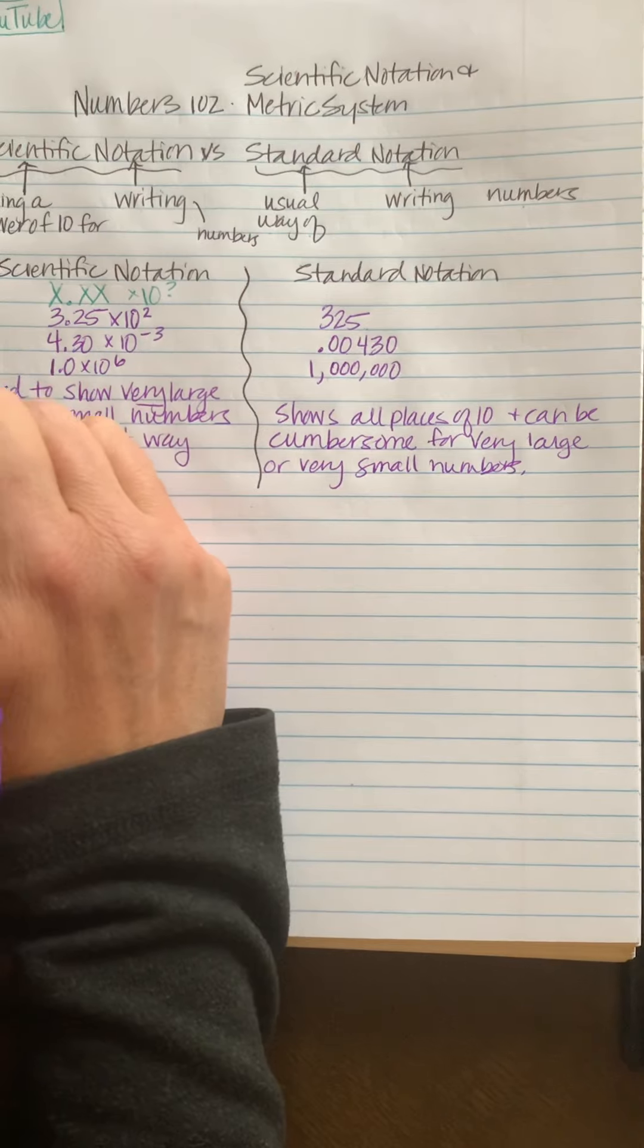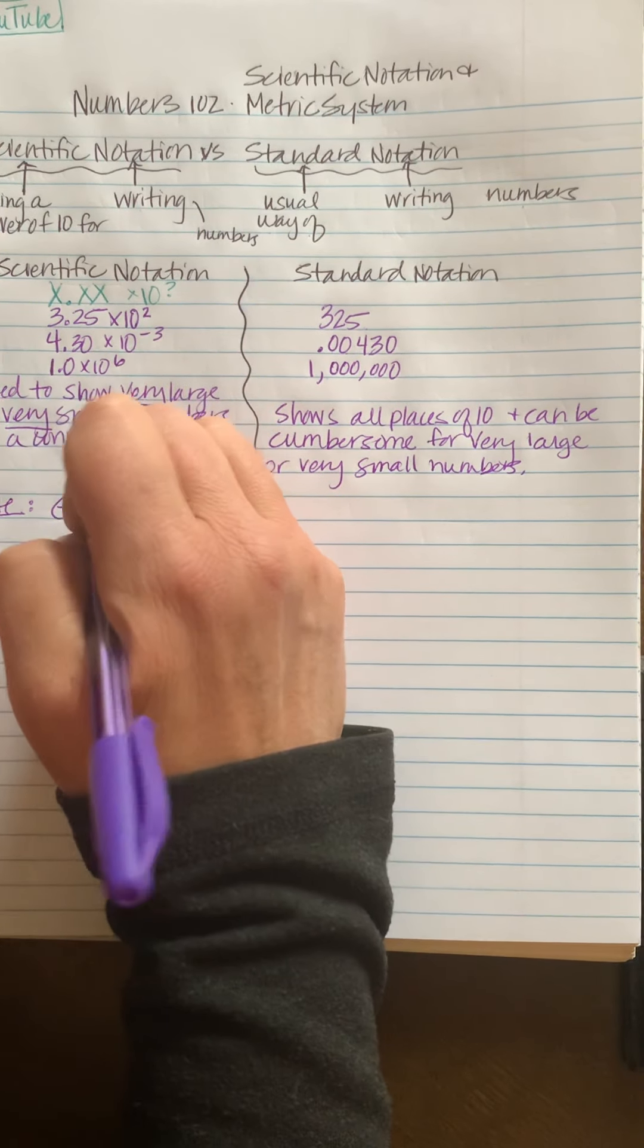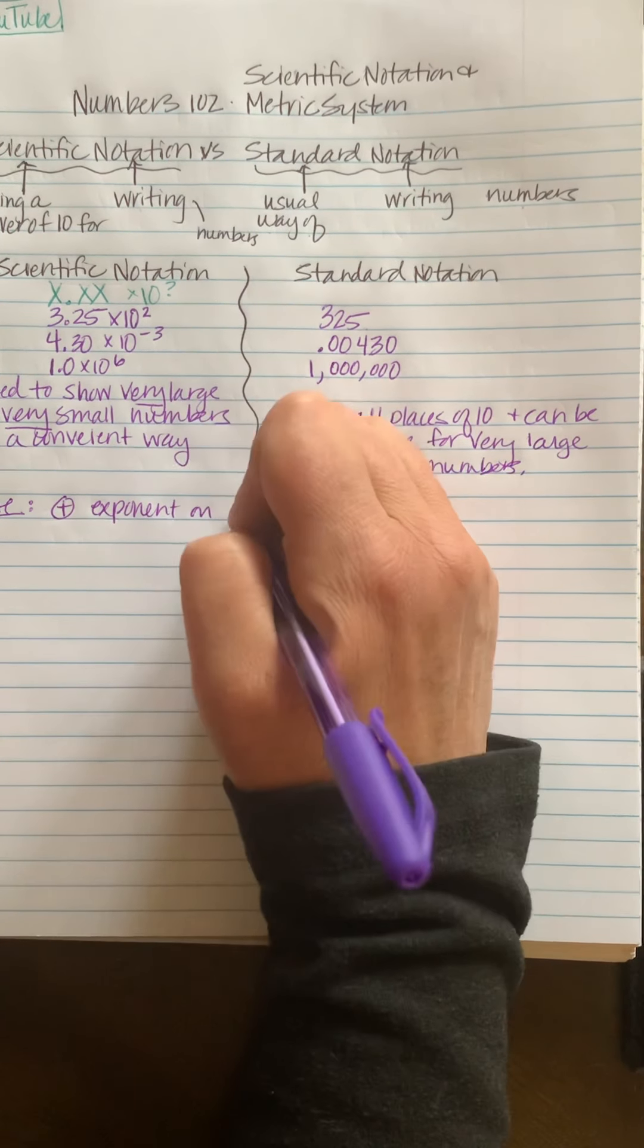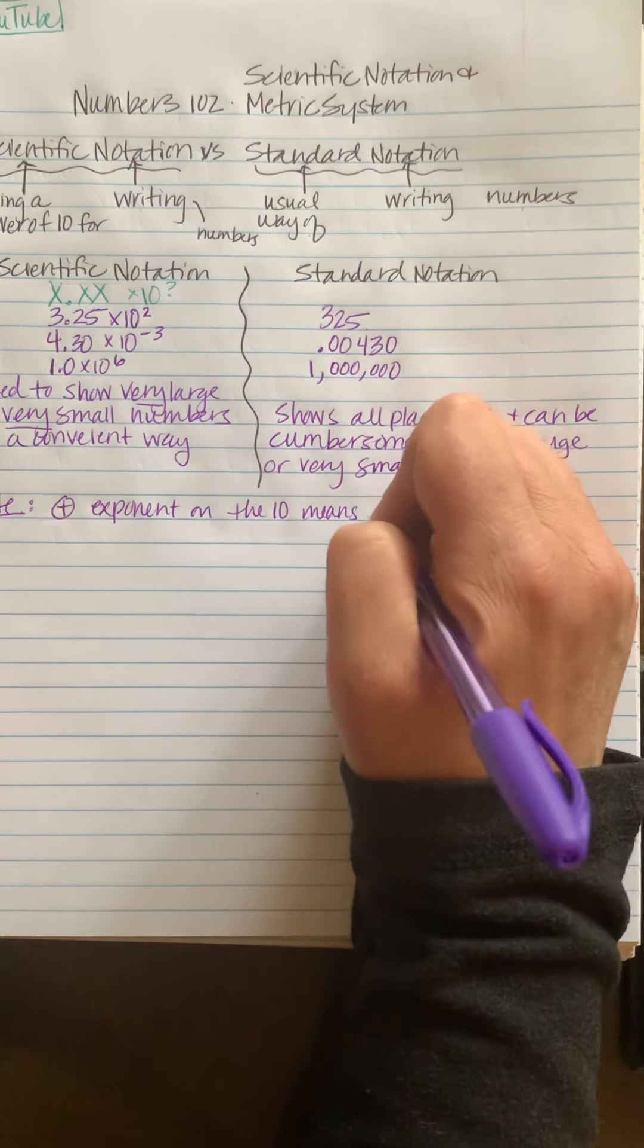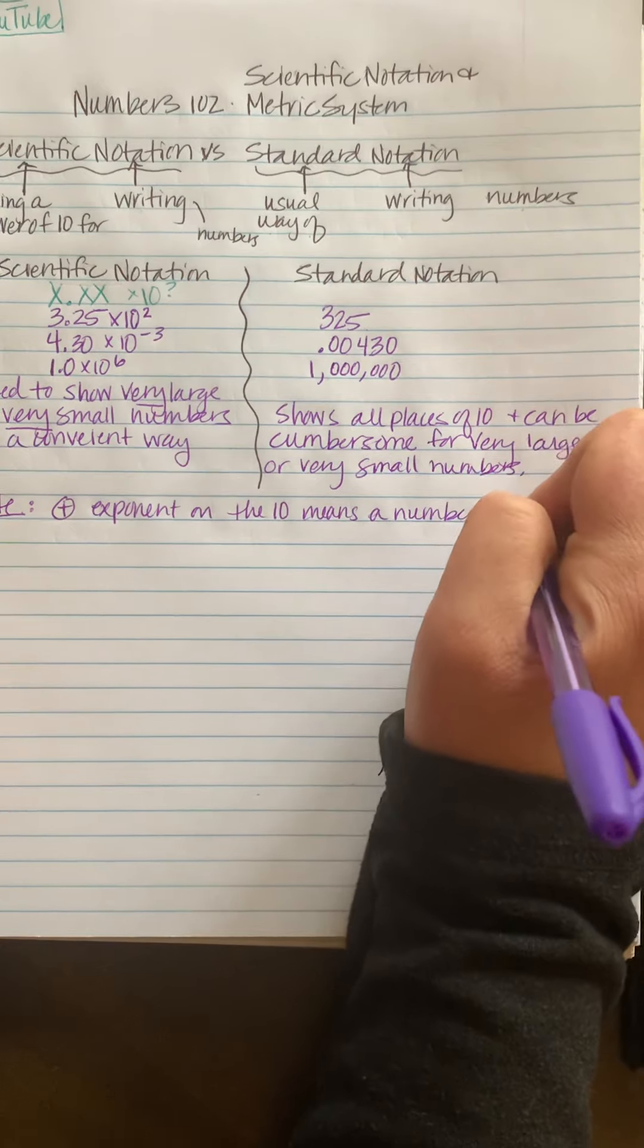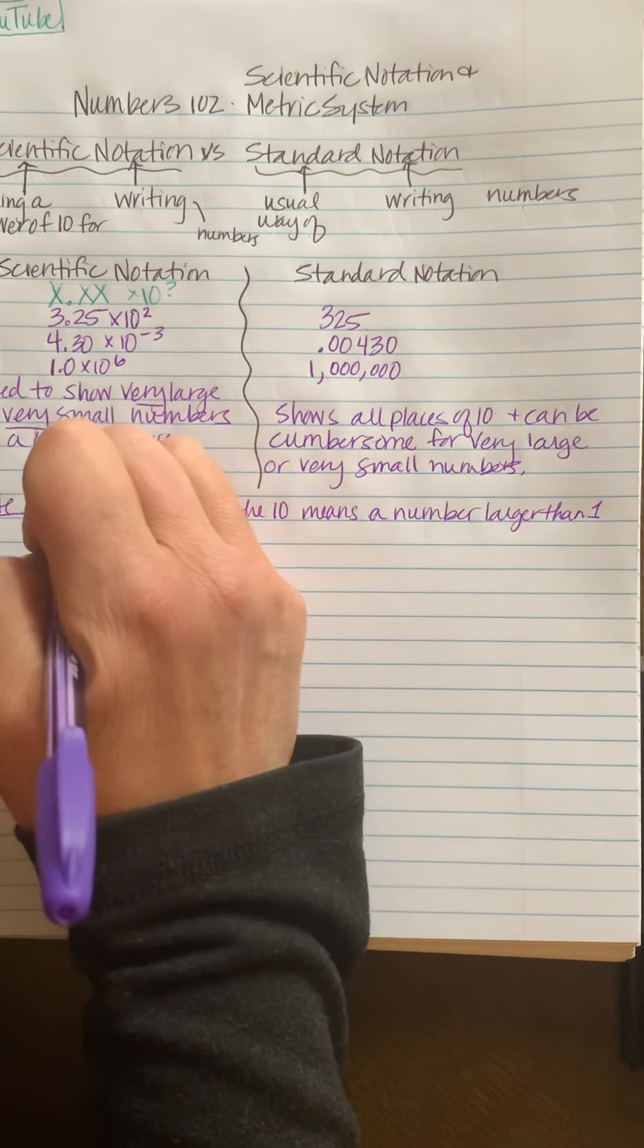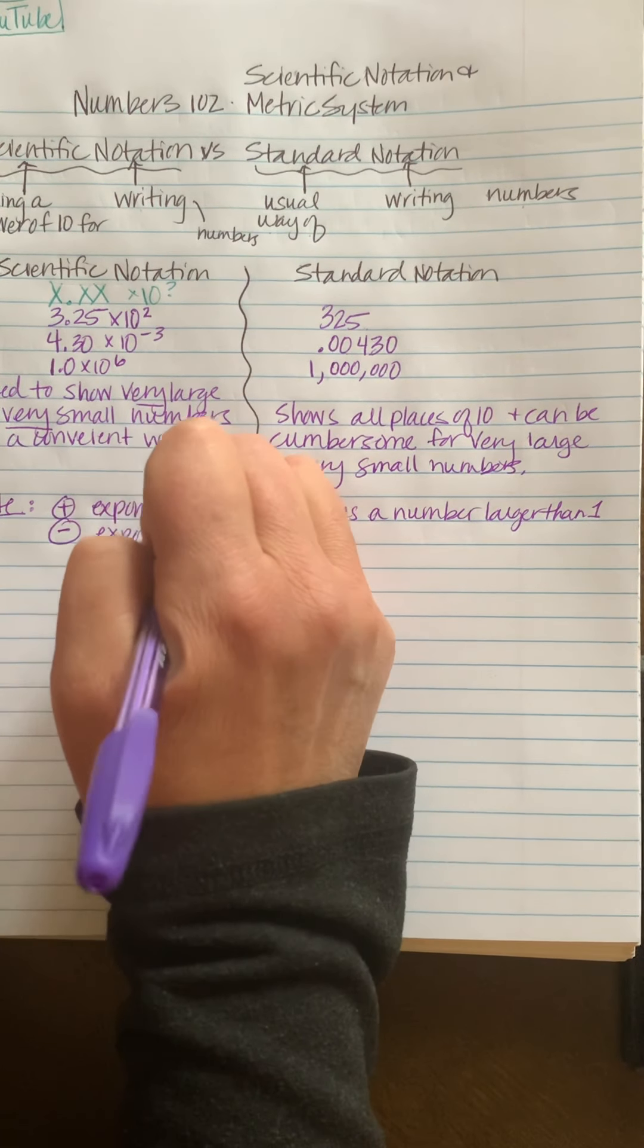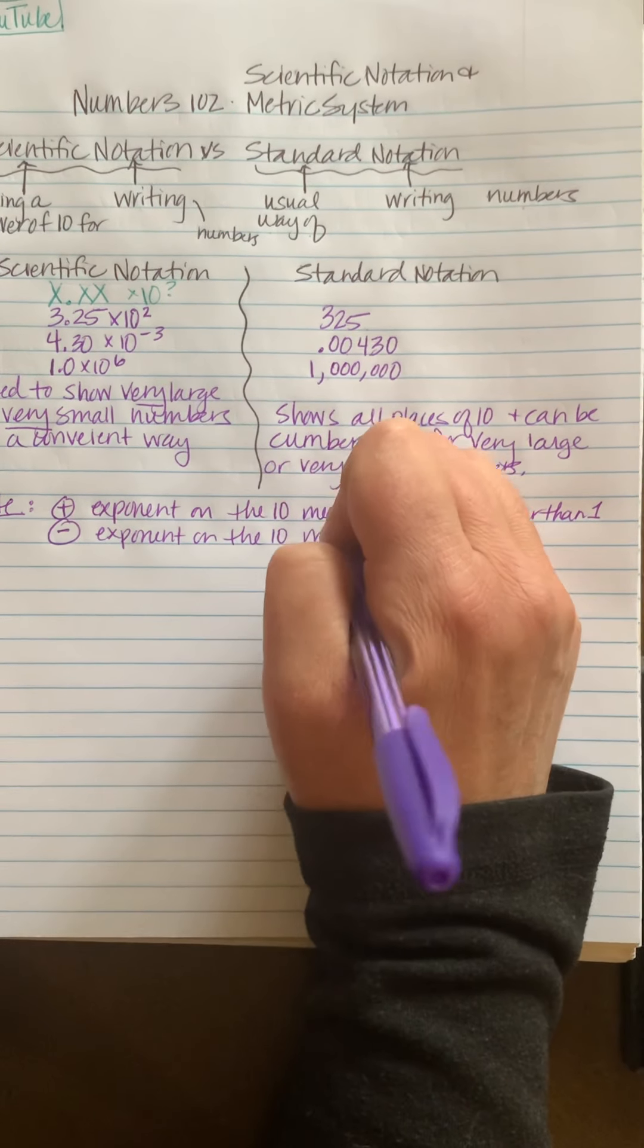Okay, and just a quick note: a positive exponent on the 10 means a number larger than 1, and a negative exponent on the 10 means a number smaller than one.